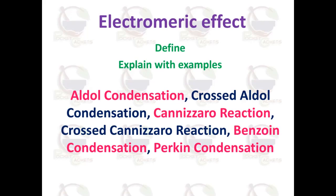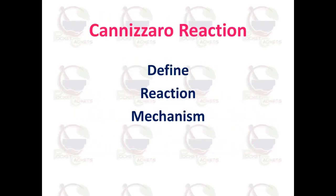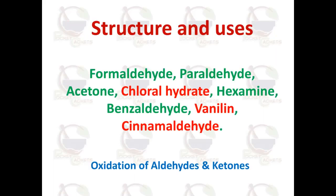Important named reactions include aldol condensation, Cannizzaro reaction, benzoin condensation, and Perkin condensation. These named reactions can be asked as 2-mark questions. For Cannizzaro reaction in particular, explain what it is and why it occurs — the mechanism should also be explained. The aromatic valence and charge considerations are important for this mechanism.